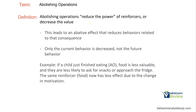An abolishing operation is the opposite — we're going to reduce the power of reinforcers or consequences, decreasing their value. Once the value is decreased, an abative effect takes place, and behaviors related to that consequence are also reduced. For example, if you go out drinking with friends and indulge in a bunch of drinks, the next day the value of those drinks and going out has likely reduced, so all those related behaviors are probably reduced as well.